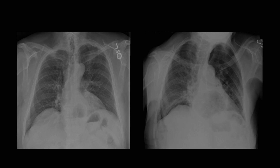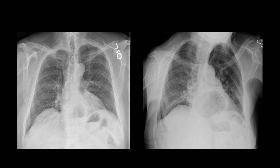In each of these x-rays, there appears to be a pocket of gas in the mediastinum within the cardiac silhouette. This is how a hiatal hernia looks on x-ray, which occurs when a portion of the stomach herniates upwards through the diaphragm into the thorax. While patients can develop significant GERD-like symptoms from this, it also can be surprisingly asymptomatic.